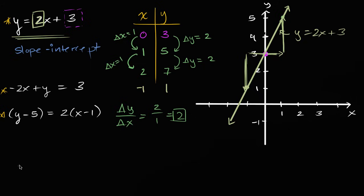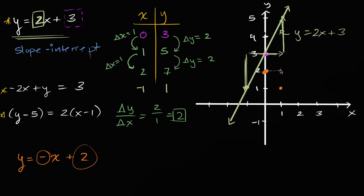If you were given another linear equation, let's say y is equal to negative x plus two, immediately you can say: my y-intercept is going to be the point zero comma two, so I'm going to intersect the y-axis right at that point. And I have a slope of negative one — the coefficient here is really just negative one. So as we increase x by one, we're going to decrease y by one. If you increase x by two, you're going to decrease y by two. And so our line is going to look something like this.